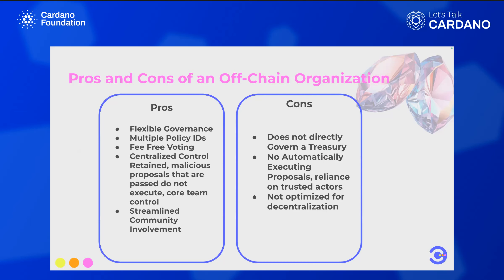You can control who is able to create governance actions in this off-chain organization — is there an admin approval process before something goes to a live vote? We also have fee-free voting. When you cast votes on-chain there's a fee, but with this Web 2.5 snapshot voting there's no fee. You also retain centralized control — proposals that are passed don't automatically execute, so you're protected from social attacks, with the core team able to keep control of this off-chain organization. You also get streamlined community involvement.